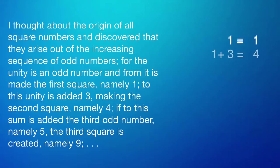To this unity is added 3, making the second square, namely 4. If to the sum is added the third odd number, namely 5, the third square is created, namely 9.